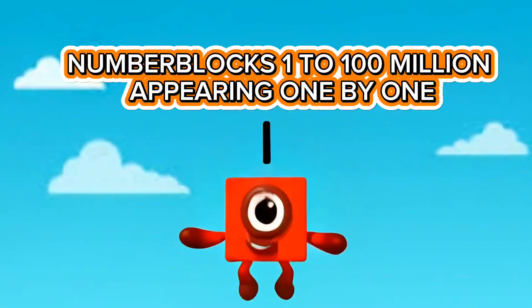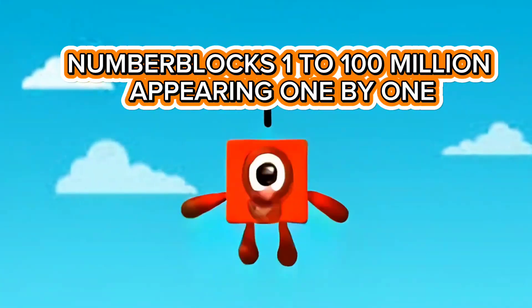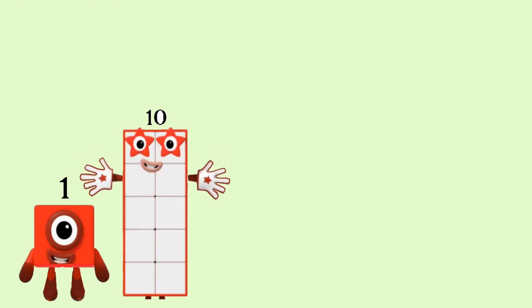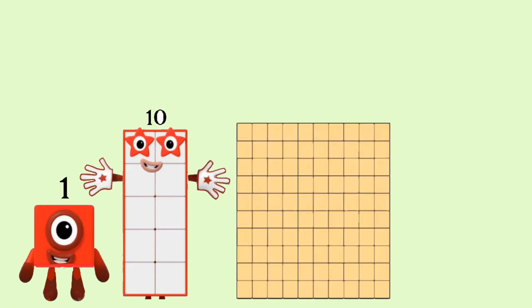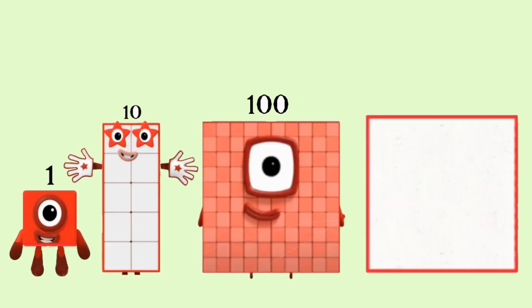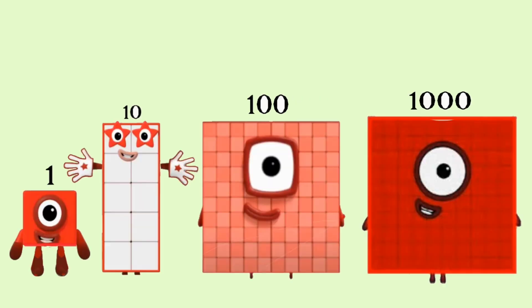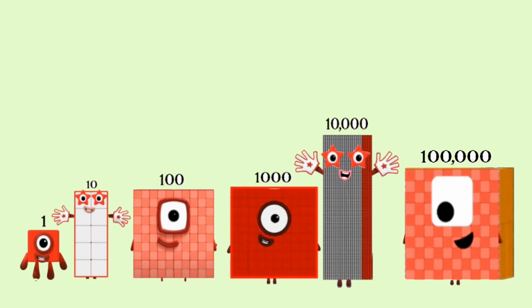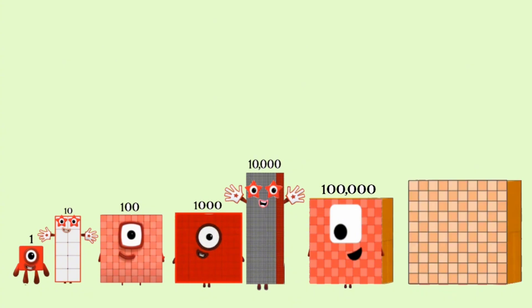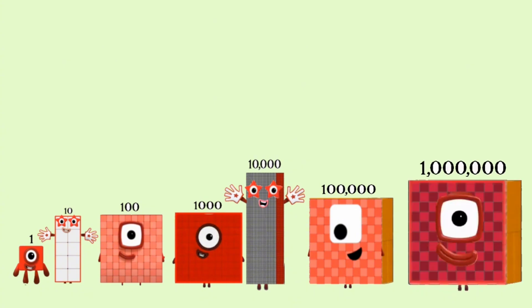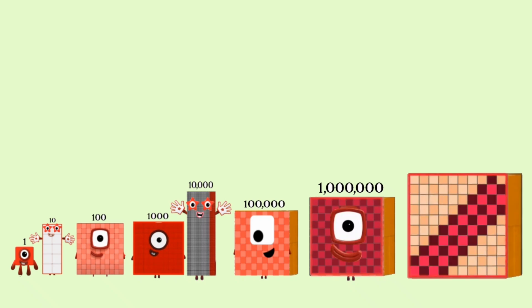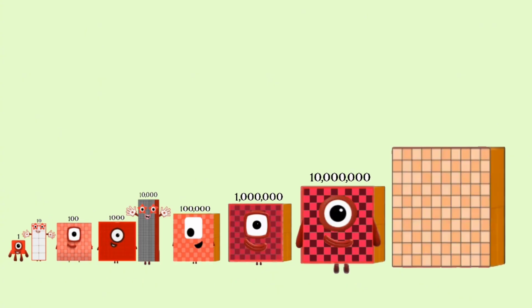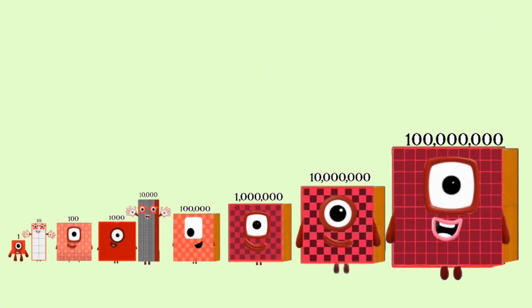Number blocks one to one hundred million, appearing one by one. Negative one. One hundred. One thousand. One hundred. 1,000. 100,000. 1,000,000. 10,000,000. 100,000,000.